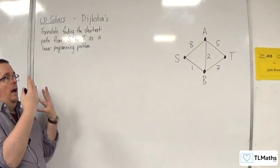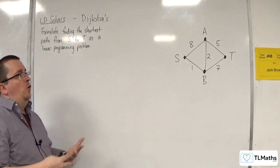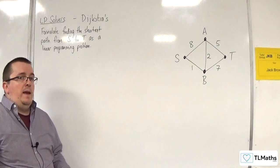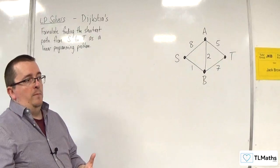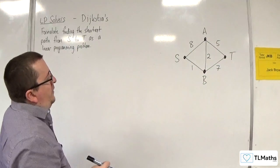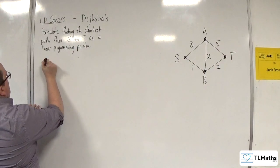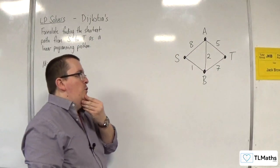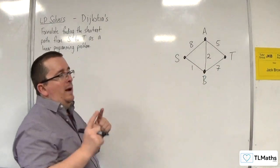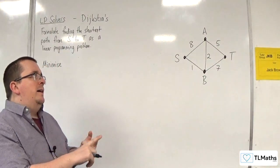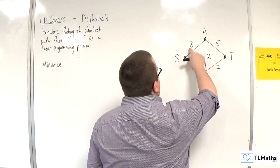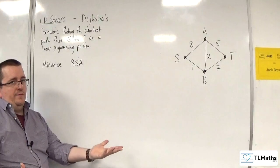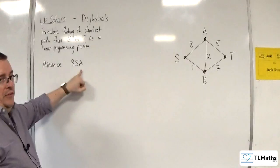I could use Dijkstra's algorithm to do this, but the whole point of this exercise is being able to write the shortest path as a linear programming problem that I could then type into a program like LINDO, and it would be able to solve the problem for me. So I want to minimize the total length of the network, and I'm going to write out each of the possible edges I could use multiplied by their weight — for example, 8 lots of S,A. S,A is an indicator variable that could either be 1 or 0, so you're either going to get 8 times 1 or 8 times 0.